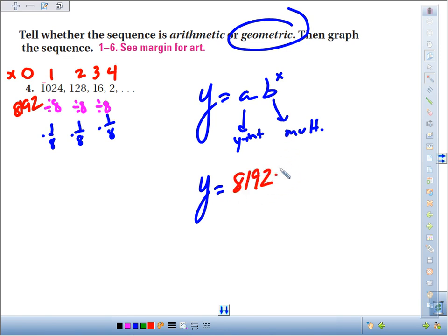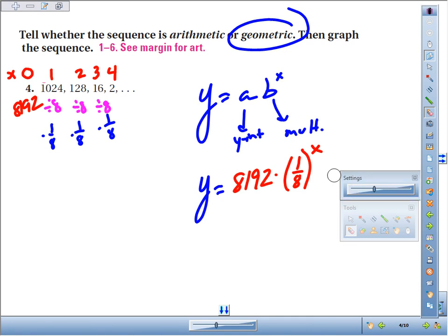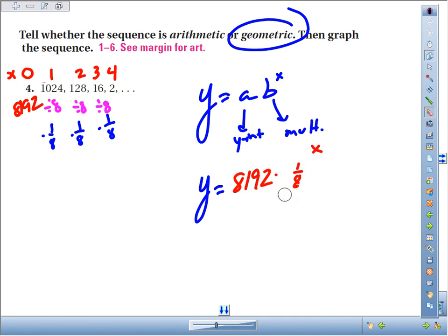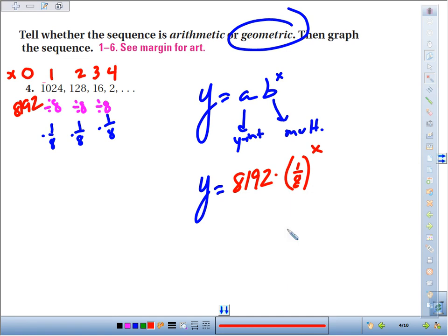Y equals 8192 times our multiplier, which we figured out was 1/8, to the x power. It's important that you put the parentheses around 1/8. If you don't, the only thing that really gets the exponent is the one. But we have to multiply by this factor of 1/8 every time, so we have to make sure we include the 8, so we put parentheses around the fraction.